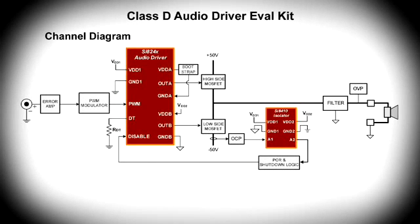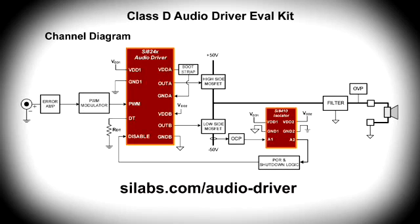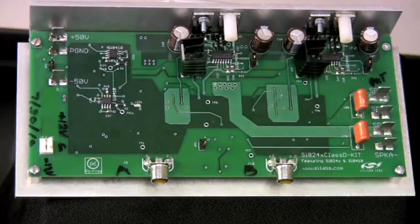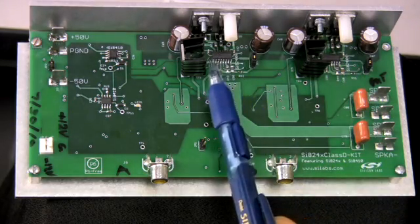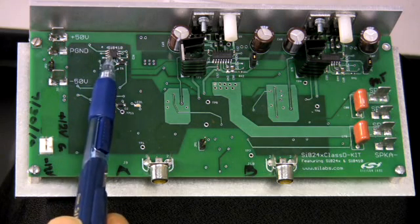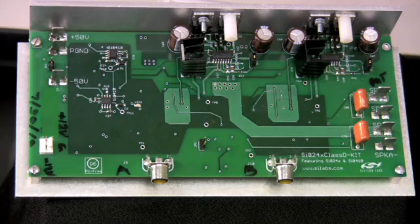Silicon Laboratories offers a stereo Class D evaluation board delivering 120 watts RMS per channel. Here is a channel block diagram of the evaluation kit, which is available at the URL shown below. The 824x1 audio driver provides high side and low side output drive with dead time determined by the value of resistor RDT. Note also the single channel 8410 isolators that interface the driver to the high voltage over-current protection circuits. The Class D evaluation board operates from an external plus/minus 50 volt supply. The 824x1 audio drivers, one per channel, are located here and here.